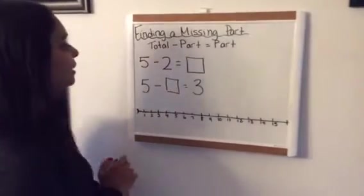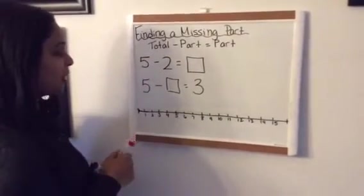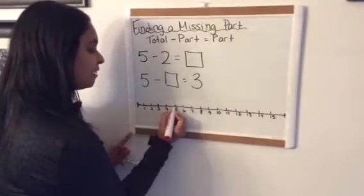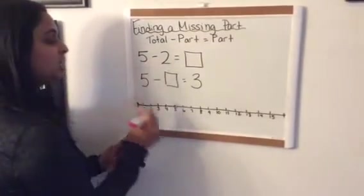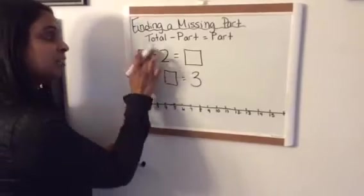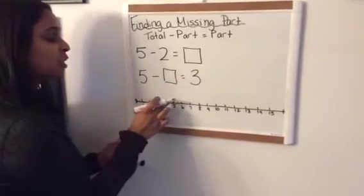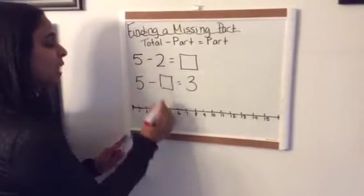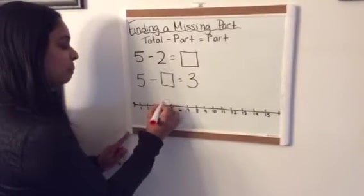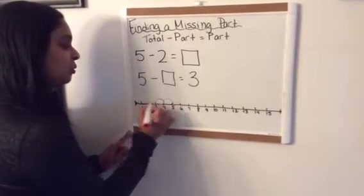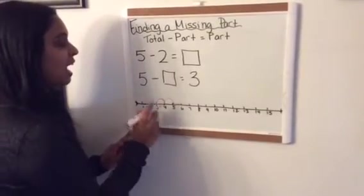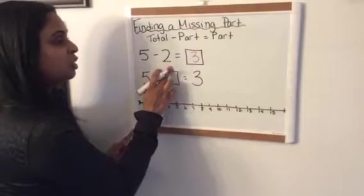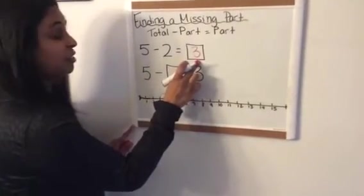So if we have five counters, I'm going to use my number line to show you I have five, and we're taking away two. I know that because of that subtraction sign, I'm going to be jumping backwards on my number line. So this is saying to jump back two. So I'm going to jump back one and two, and that means that I now have three. So I had five, I took away two, and now I have three.